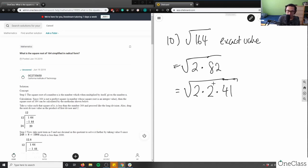So now I have 2 times 2 times 41. That's going to be my simplified version of this 164 here. And what I can do is I can group them together now. 2 times 2 equals 4. So I can say 4 times 41 here.